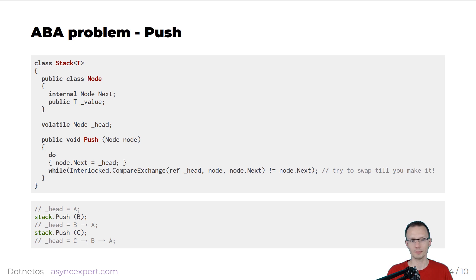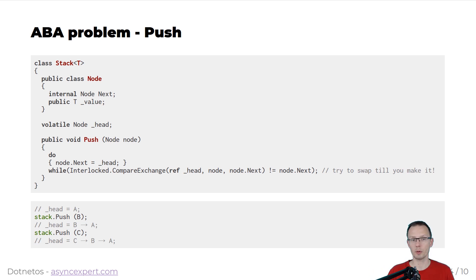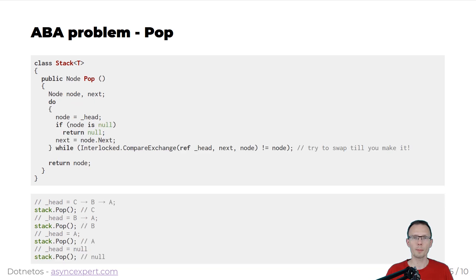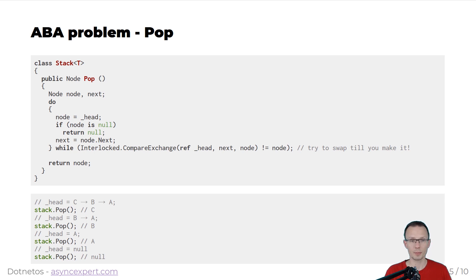If we have head A and we push B, then head will point to B and B will point to A with its next field. If we push again C, we will have head set to C, C will point to B, and B will point to A. That is just a regular stack — you just push on top and pop it. The pop operation is quite similar. We use two variables, node and next. First we read the head into the node variable. If it's null, we return null — basically head points to nothing. Otherwise, we remember next, and then we try to interlocked compare exchange the head with the next.